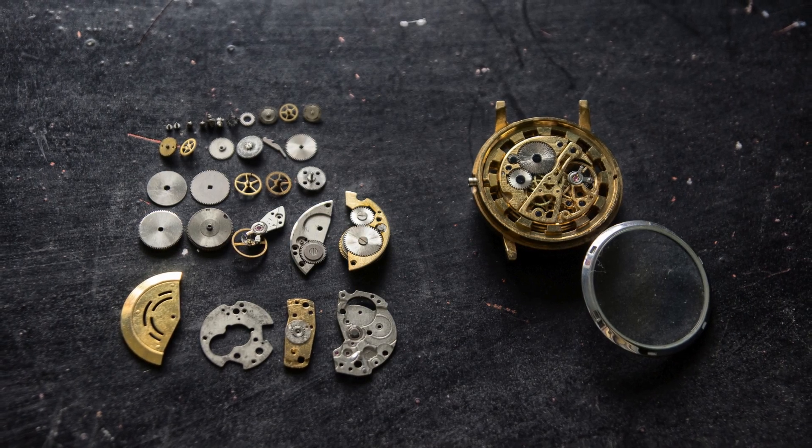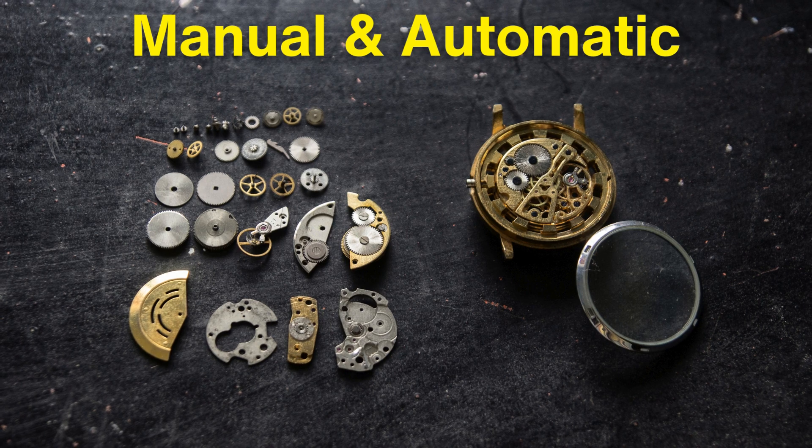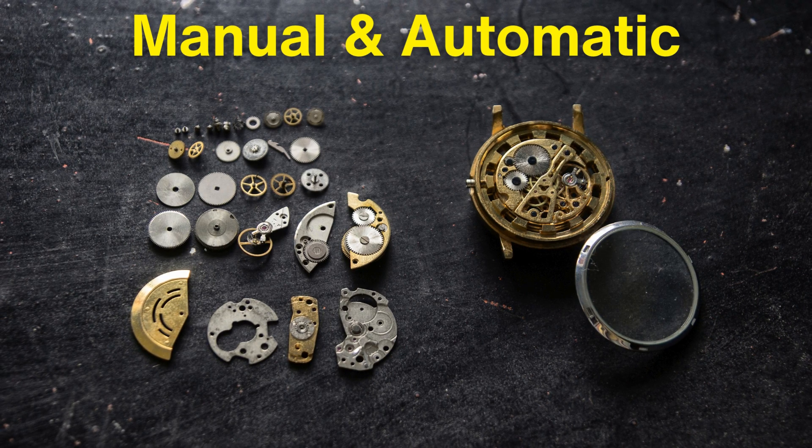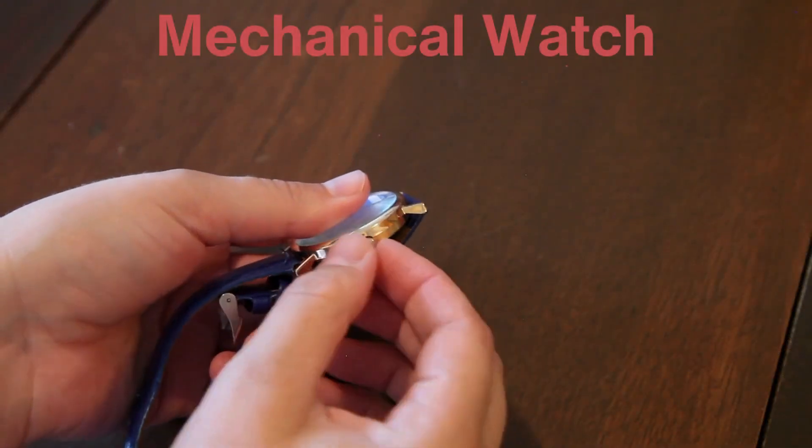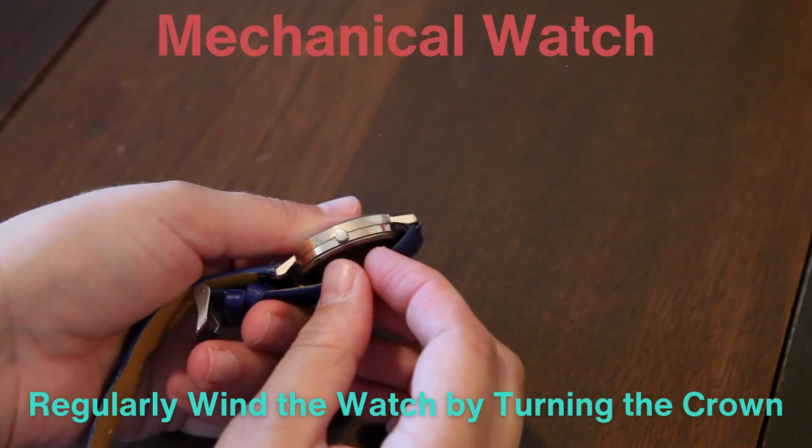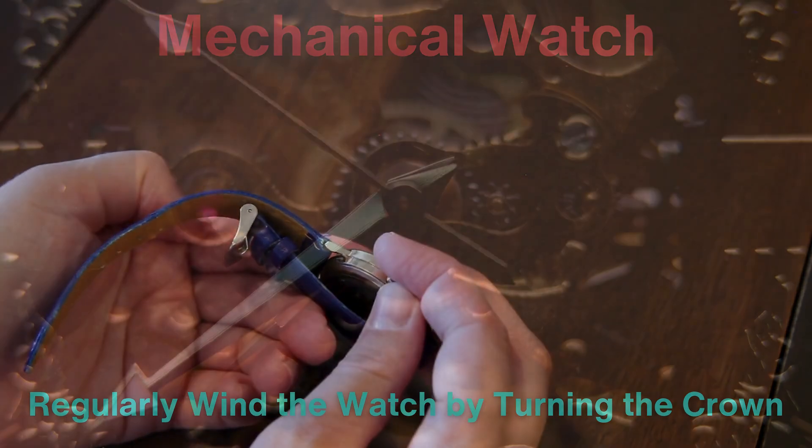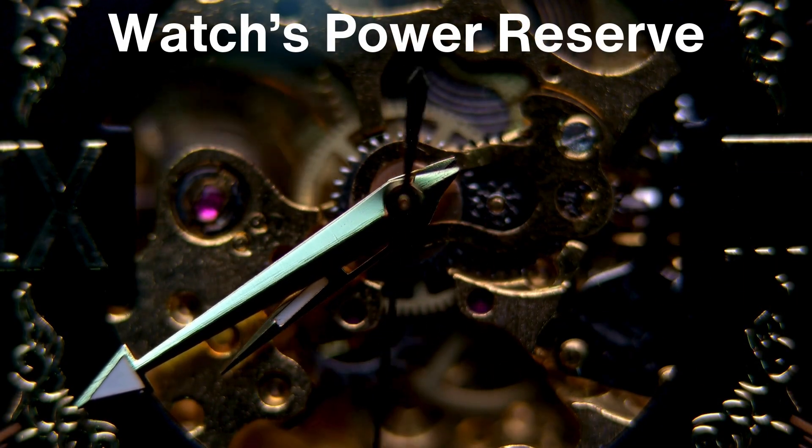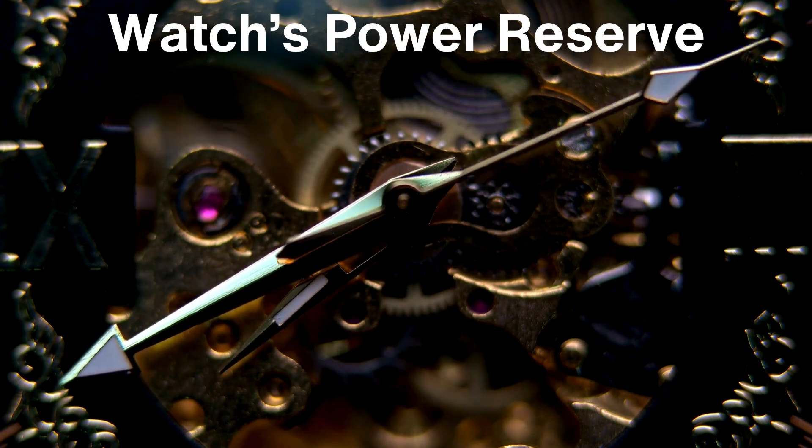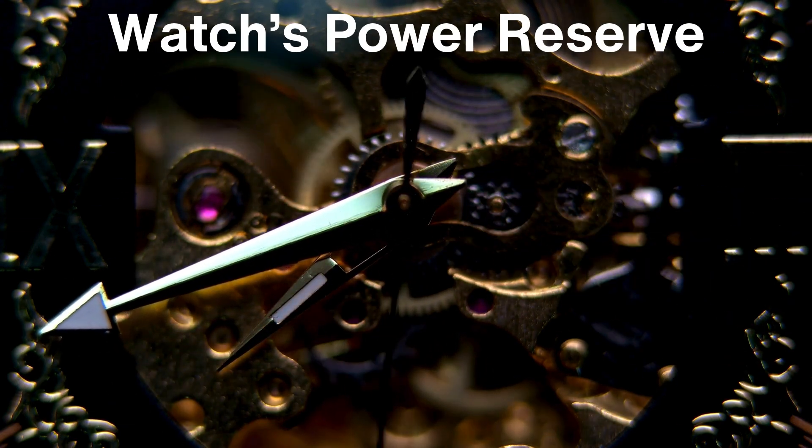There are two primary types of mechanical watches, manual and automatic. The main difference lies in how the mainspring is wound. In a manual mechanical watch, you need to regularly wind the watch by turning the crown, which tightens the mainspring. This needs to be done every day or every couple of days, depending on the watch's power reserve. The power reserve is the amount of time a fully-wound mainspring can power the watch before it runs out of energy.